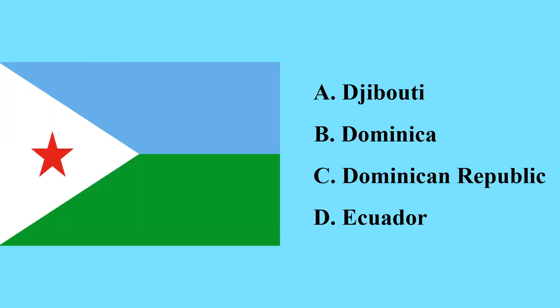You can't guess this flag — this flag is a flag of Djibouti, the smallest country in East Africa. It shares borders with three African countries: Ethiopia, Eritrea, and Somalia.